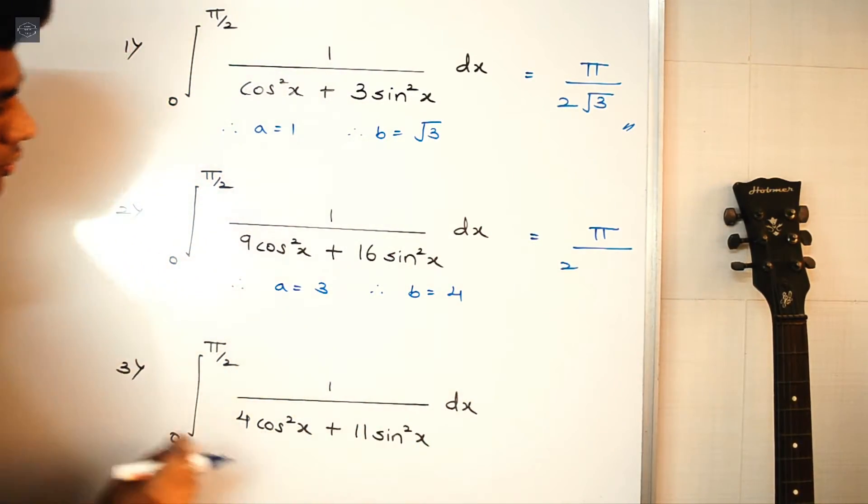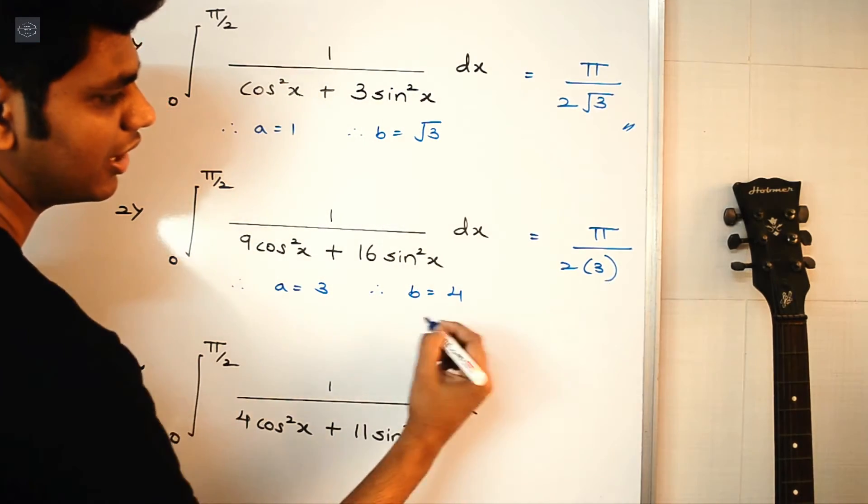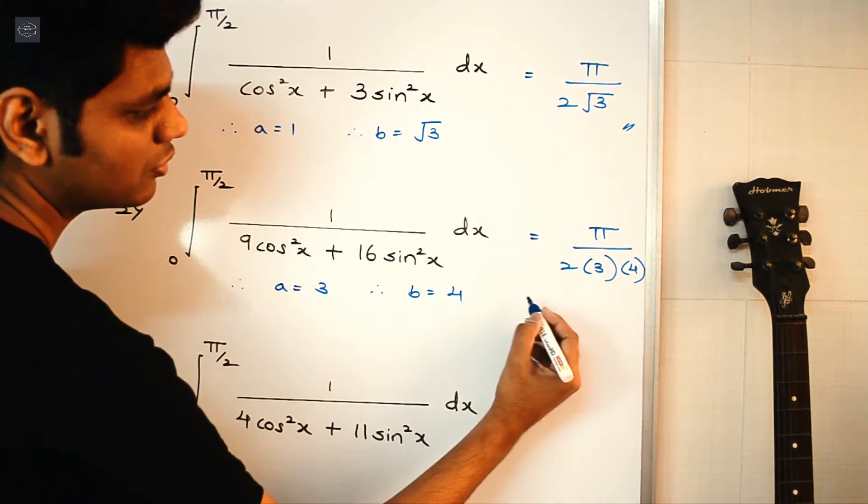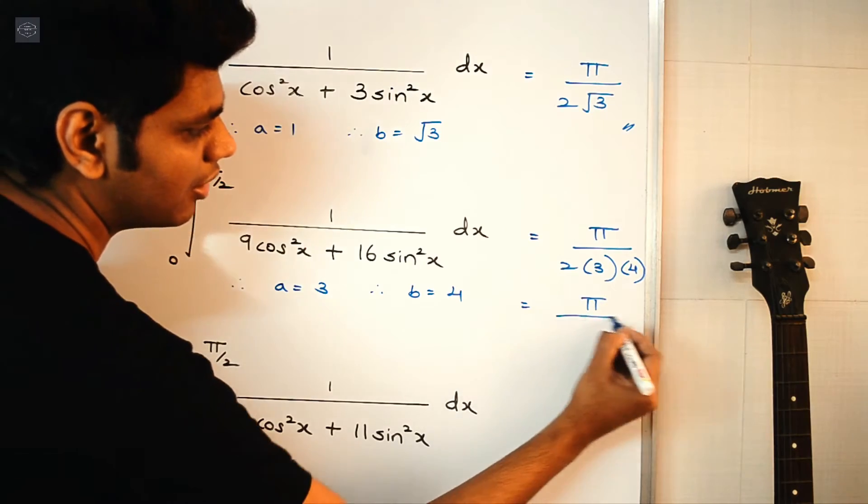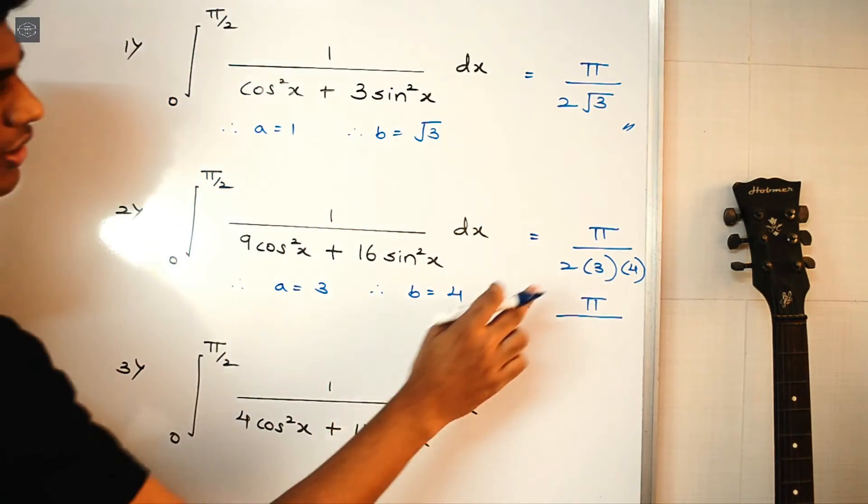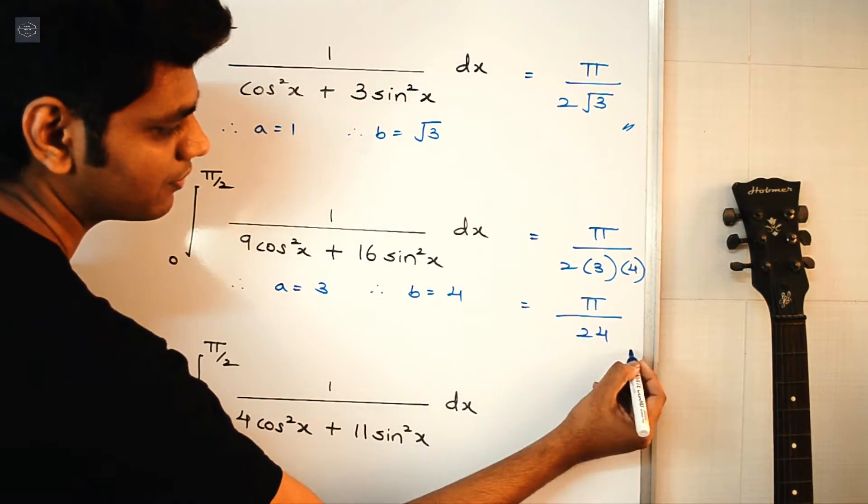So 2 times a is 3 and b is 4, which gives us π/(2×3×4) = π/24. And that's it.